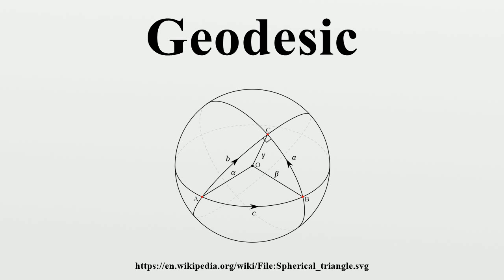A geodesic was the shortest route between two points on the Earth's surface, namely a segment of a great circle. The term has been generalized to include measurements in much more general mathematical spaces, for example in graph theory. One might consider a geodesic between two vertices, or nodes, of a graph. Geodesics are of particular importance in general relativity. Time-like geodesics in general relativity describe the motion of inertial test particles.